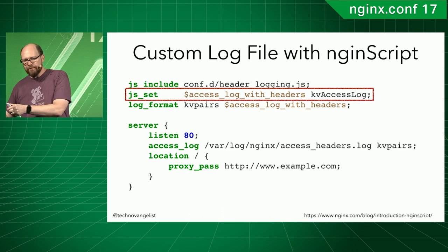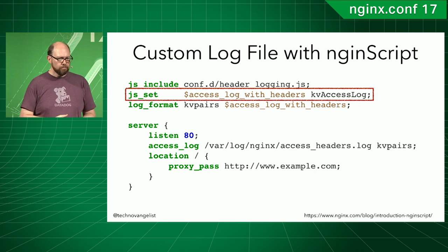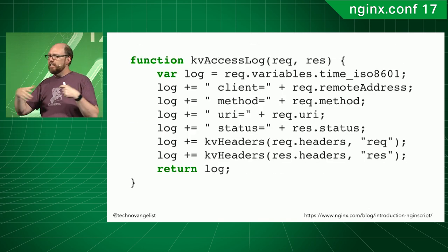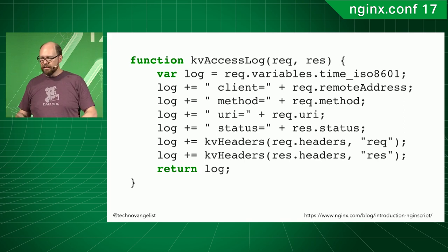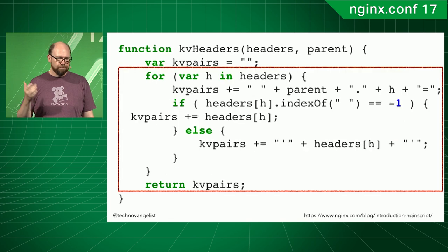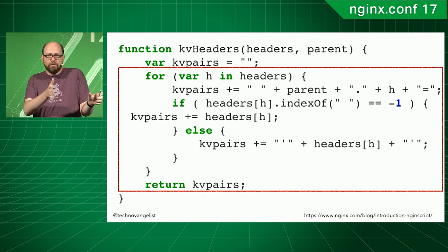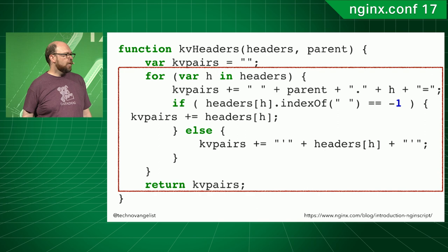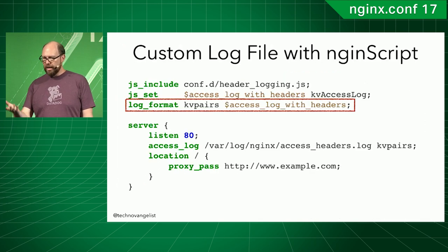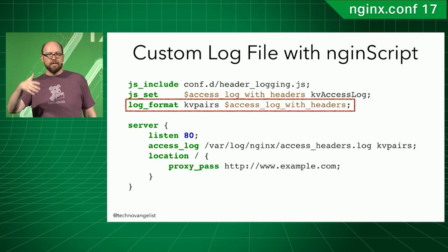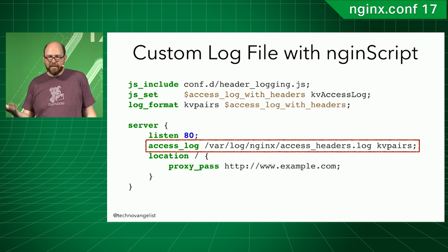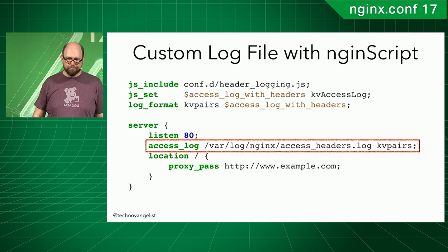The function cycles through variables, calculates time, formats things nicely, and there's a KV_headers function that cycles through all the headers creating a key=value string added to the output. Log format KV_pairs gets set to the output of that function, and access_log — the last two things that have always been in the configuration file — are just set to the output of the function. Pretty easy. You can also do this with Lua — plenty of examples for that.